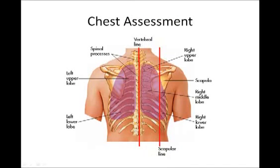Let's look at the back part here as well — this is the posterior part of the thorax, giving you some more visual representations. Think about this when you're listening to lung sounds and assessing patients. I want to make this more of a visual presentation and really let you get some idea of where the lungs sit inside the chest and where they are in relation to different rib areas. That can help lead you to thinking about injuries to the lungs if certain areas of the chest or certain ribs might be damaged and affect the lungs.